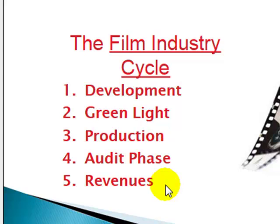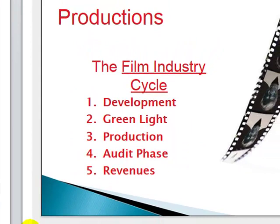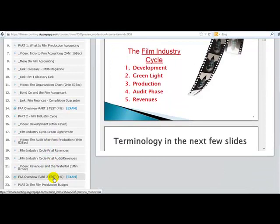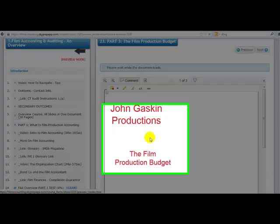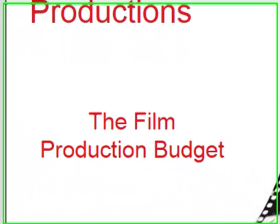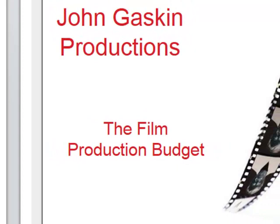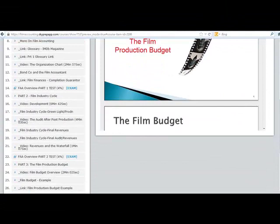That's how they share the revenues. In part two I have several videos and lots of pictorial representation. Part three is the film production budget. The budget is the backbone of financing — it's how the movie got sold. Financiers, completion bond guarantors, production accountants, producers — we all sign off on this production budget. That is what the financier expects. It's very important. And then we do the cost report.